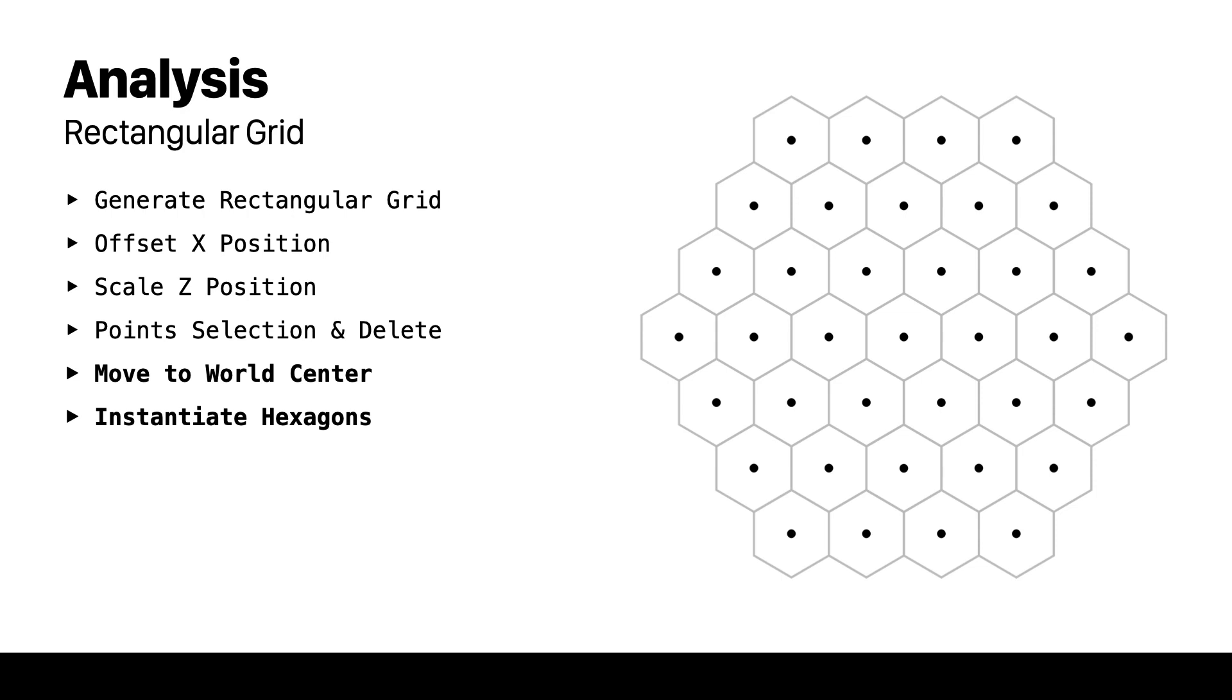Finally we need to move the grid to the world center in order to utilize some radial properties. The grid is ready. Now we just need to instantiate the hexagon mesh to the points. Although this is the most popular way of generating a hexagon grid it didn't fit my needs and it wasn't so performant. The performance gets heavier when using nodes like transform, match size or blast instead of vex.